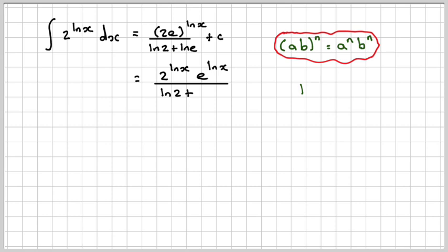And ln e equals 1, because it's log to the base e of e. You have the same base, so that equals 1. So this becomes plus 1. Don't forget the plus c.